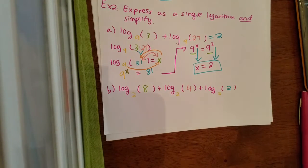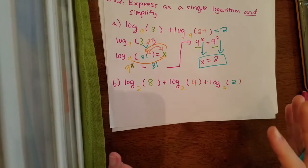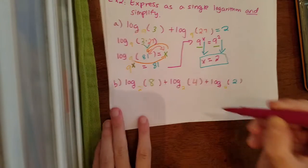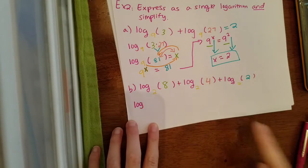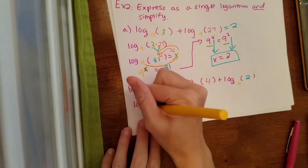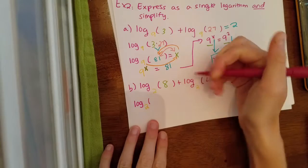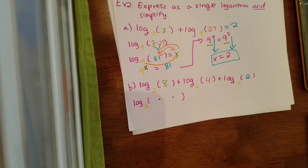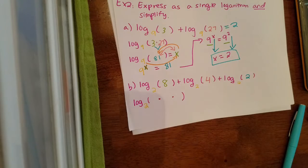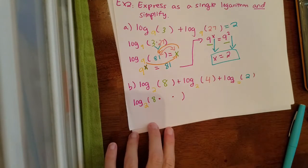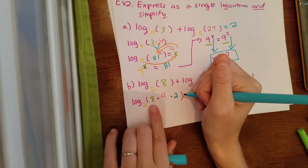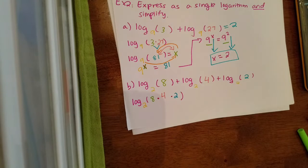Part B is pretty much the same thing we just did. If you feel confident, fast forward the video to the end and see if you get the right answer. So first we express this as a single logarithm — only one log — all the same base, so we're good. My base is 2. In my parentheses I have three numbers this time, so I'm going to multiply all three: 8 times 4 times 2.